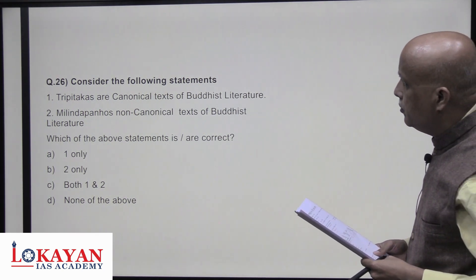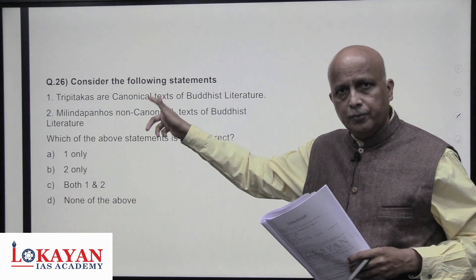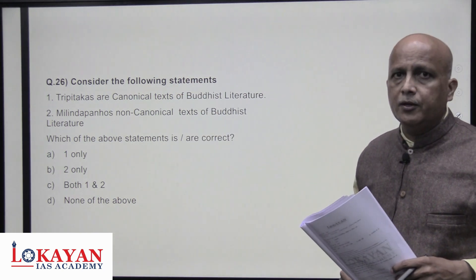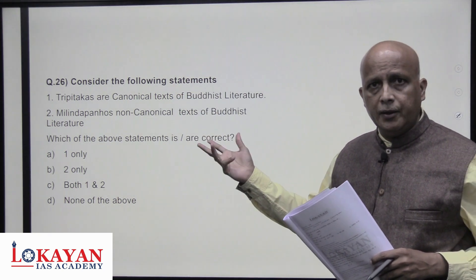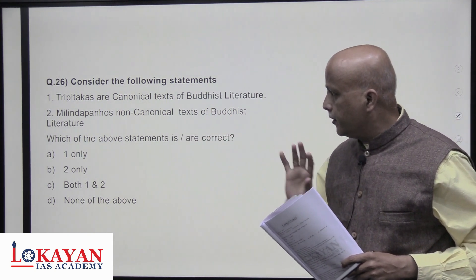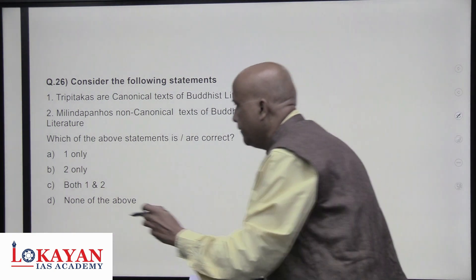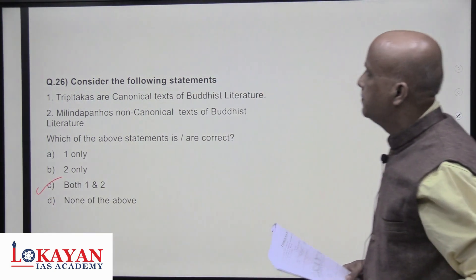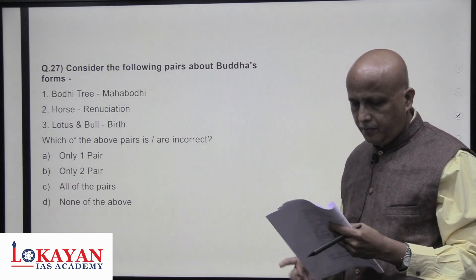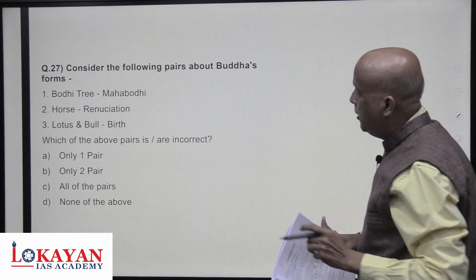Consider the following statements about Buddhist texts. The Tripitakas are the canonical texts of Buddhist literature — three books: Vinaya Pitaka, Sutta Pitaka, and Abhidhamma Pitaka. Milindapanha is a non-canonical text of Buddhist literature — correct. Both statements one and two are correct — answer is C.